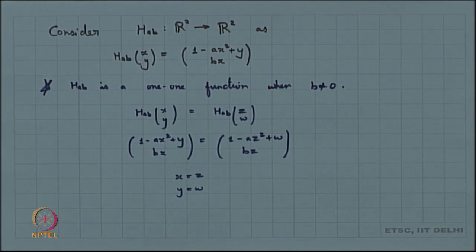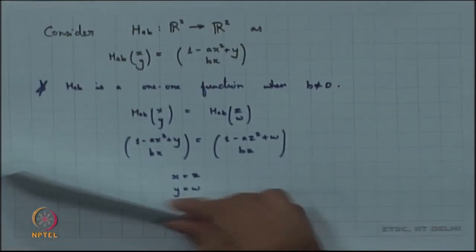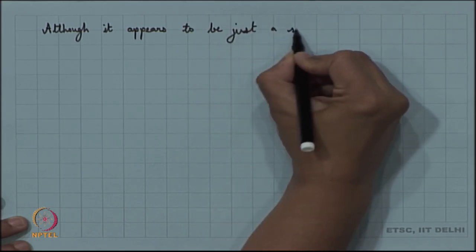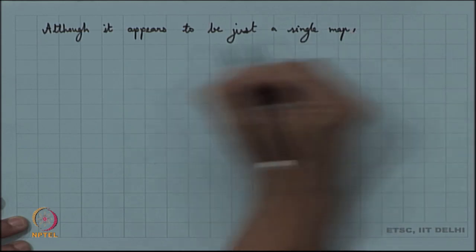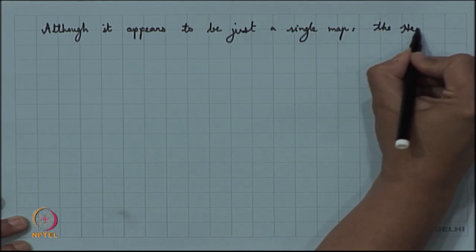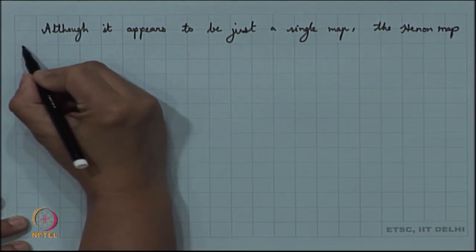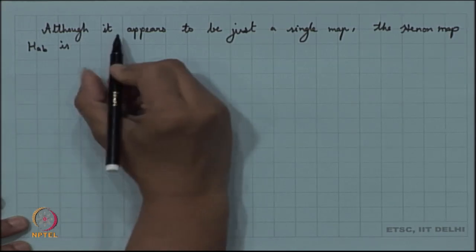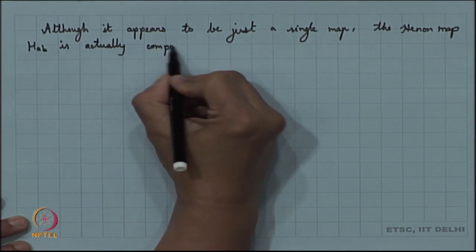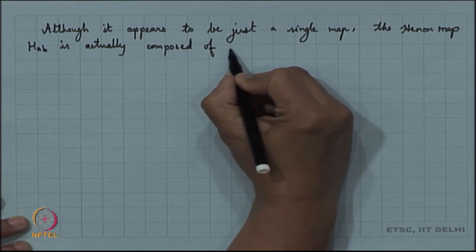The Hennon map can be thought of as a composition of three different maps. Although it appears to be just a single map, it is actually composed of three different transformations.